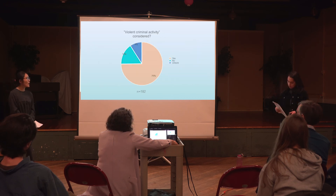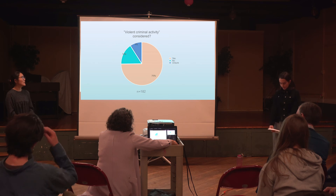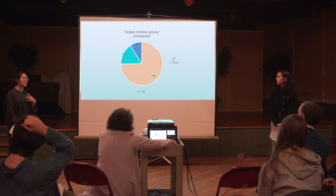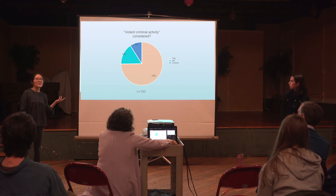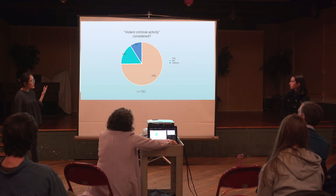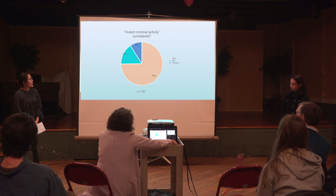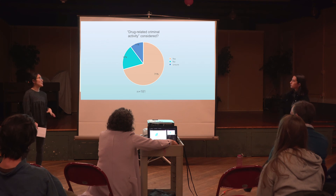These are some results from our Google Forms. One question was: was violent criminal activity considered, in addition to the HUD-mandated language? Categories were yes, no, or unsure. 75% of TSPs did consider violent criminal activity in their approval or denial decisions; 16% didn't and 9% were unsure. For drug-related criminal activity: 71% considered it in addition to HUD-mandated language, 19% didn't, and 10% were unsure.